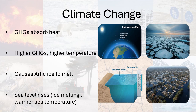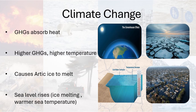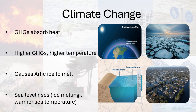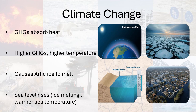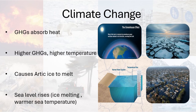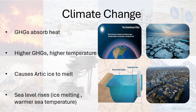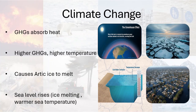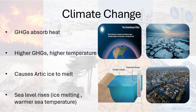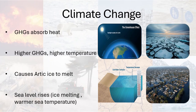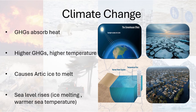We have learned in the previous GHG video that greenhouse gases act as a blanket around the earth and trap the heat. The higher concentration of these gases will result in more heat trapping, increasing the average temperature of the earth.